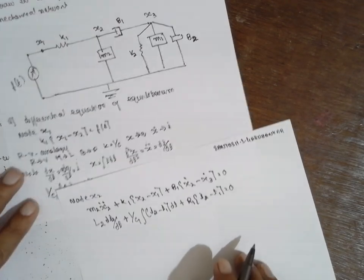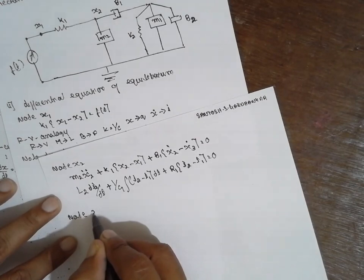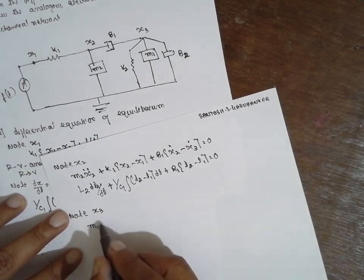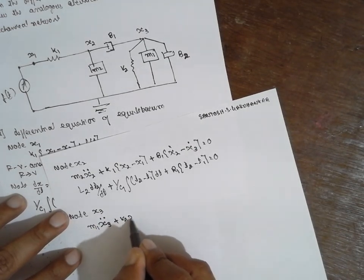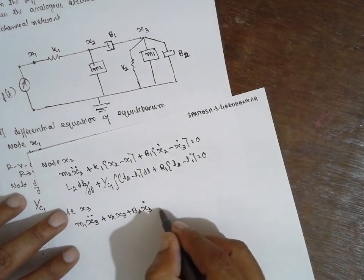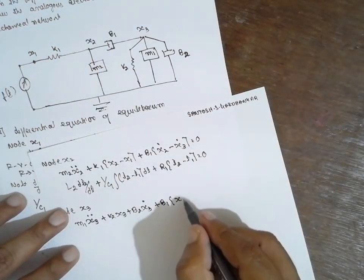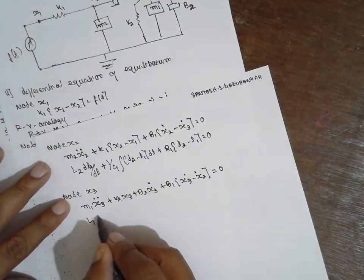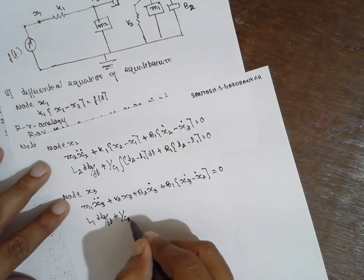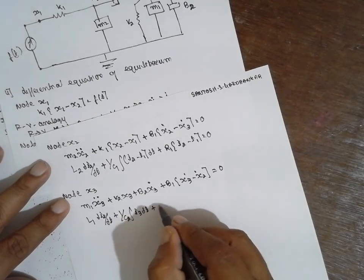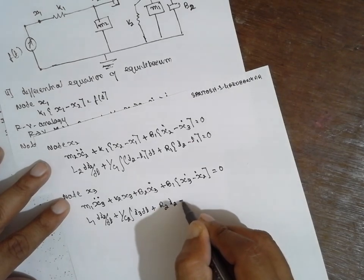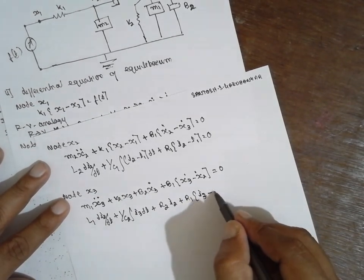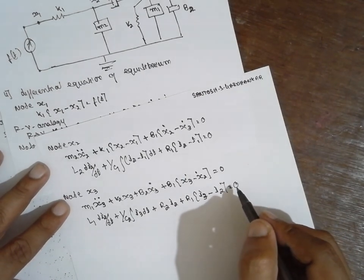For node 3: M1 x3 double dot plus K2 x3 plus B2 x3 dot plus B1 times x3 minus x2 dot equals 0. This becomes L1 di3 by dt plus 1 by C2 integration of I3 dt plus R2 I2 plus R1 times I3 minus I2 equals 0.